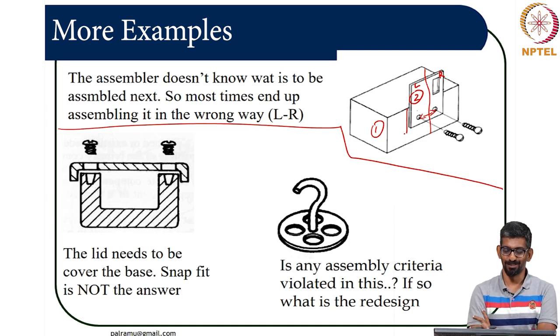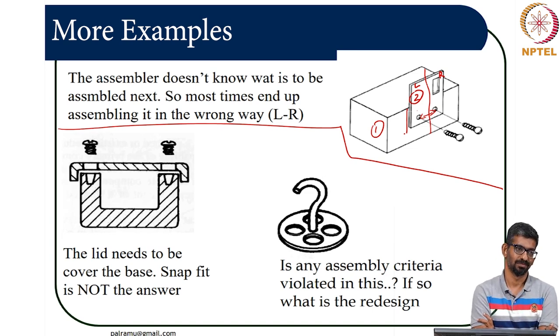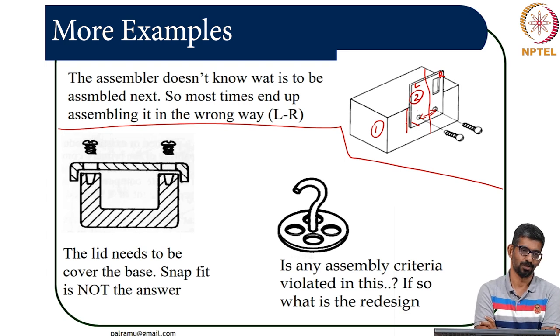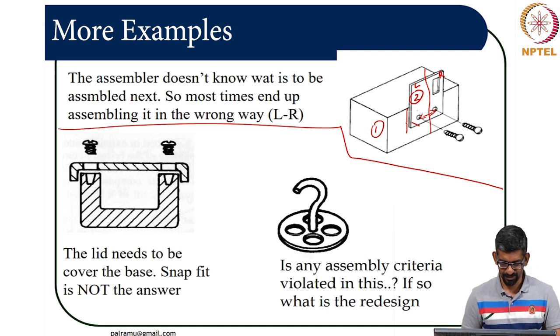Basically it could just be the symmetry - currently these two screws are symmetric to that particular axis. You can actually change - you can just put the screw a little above, so that if you do it the other way you cannot do it. That could be one solution. What else? There are plenty of solutions for this.